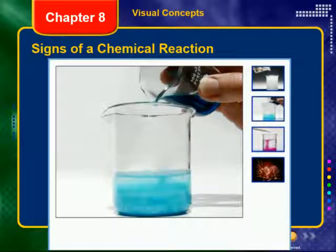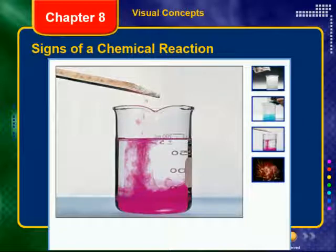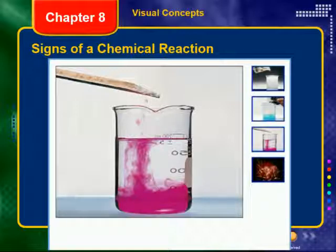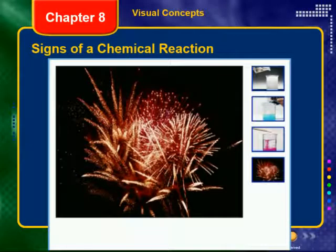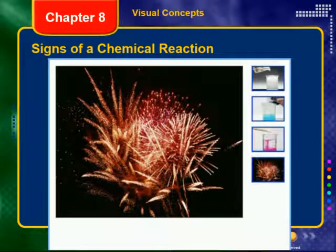Some chemical reactions produce a precipitate. When a solution of blue-tinted Epsom salt is added to a solution of water and household detergent, a precipitate forms. A color change is also a useful indication of a chemical reaction. Indicators such as phenolphthalein change color when a solution reaches a certain pH, telling us that a chemical reaction has occurred. The production of heat or light is a strong indication as well — fireworks are a good example of a chemical reaction that produces both heat and light.